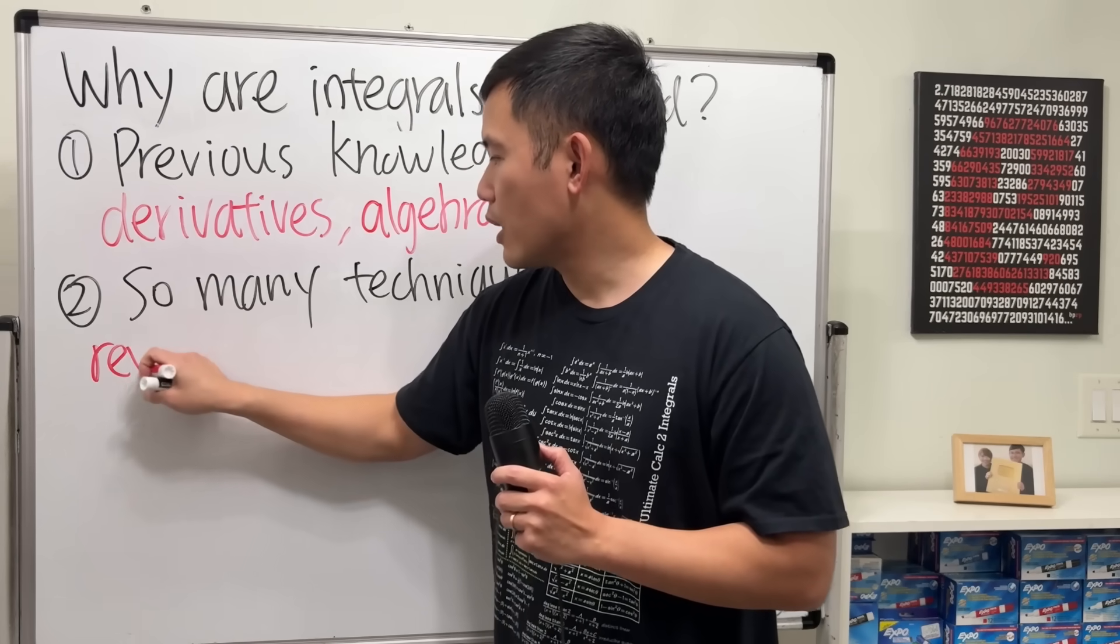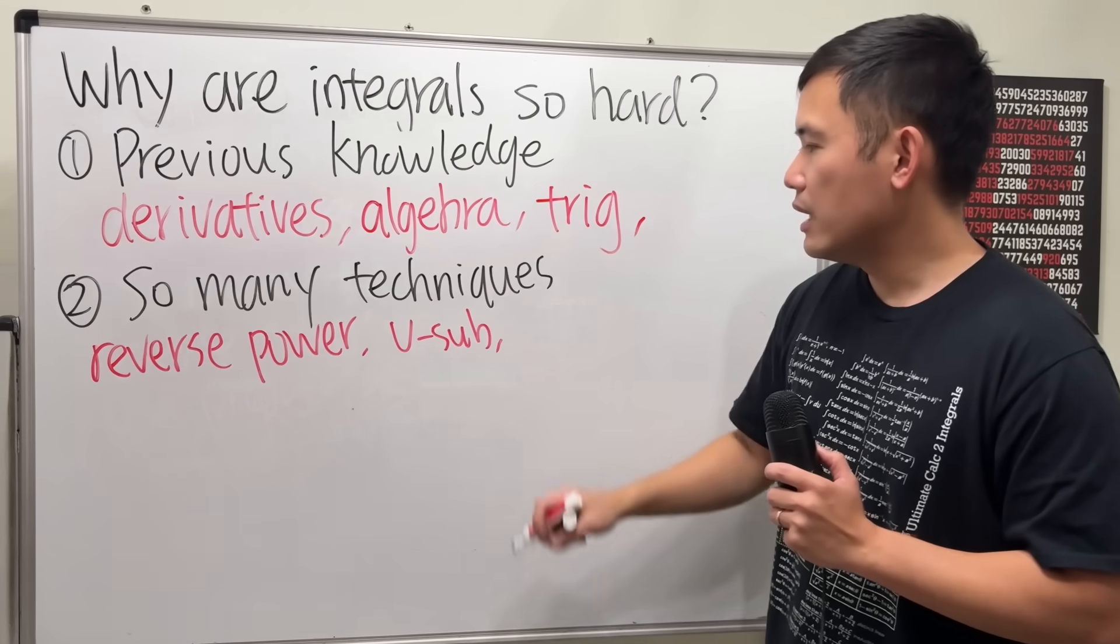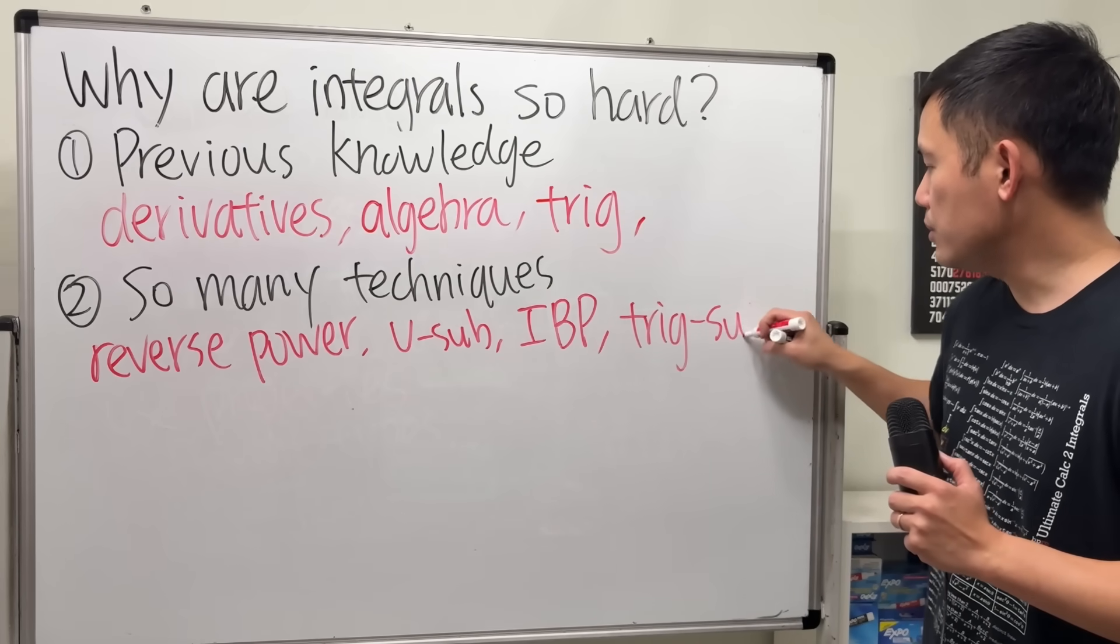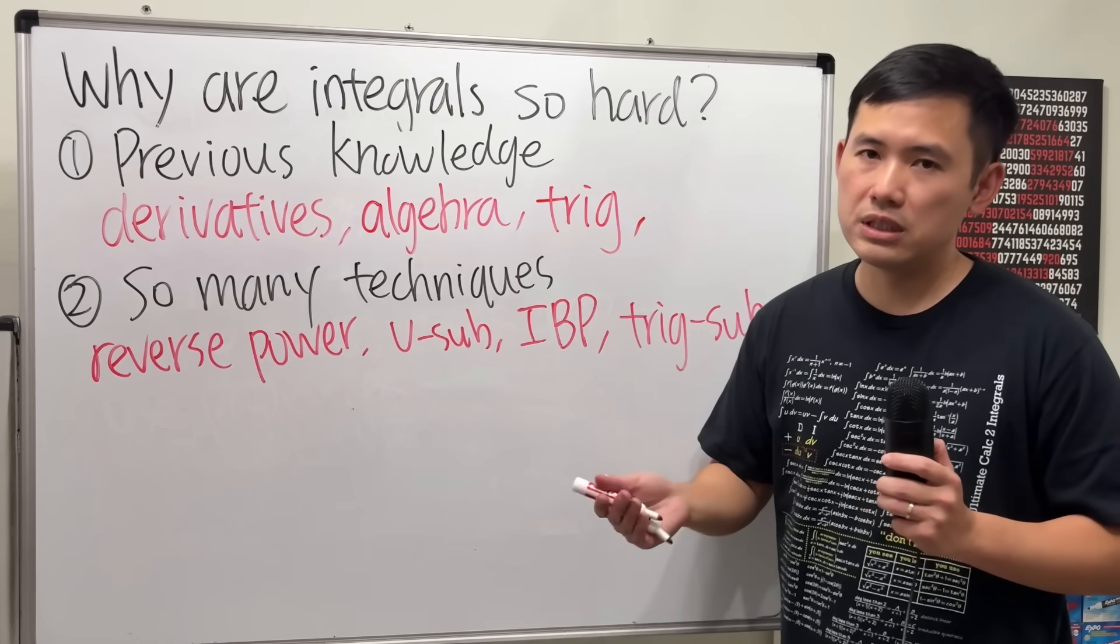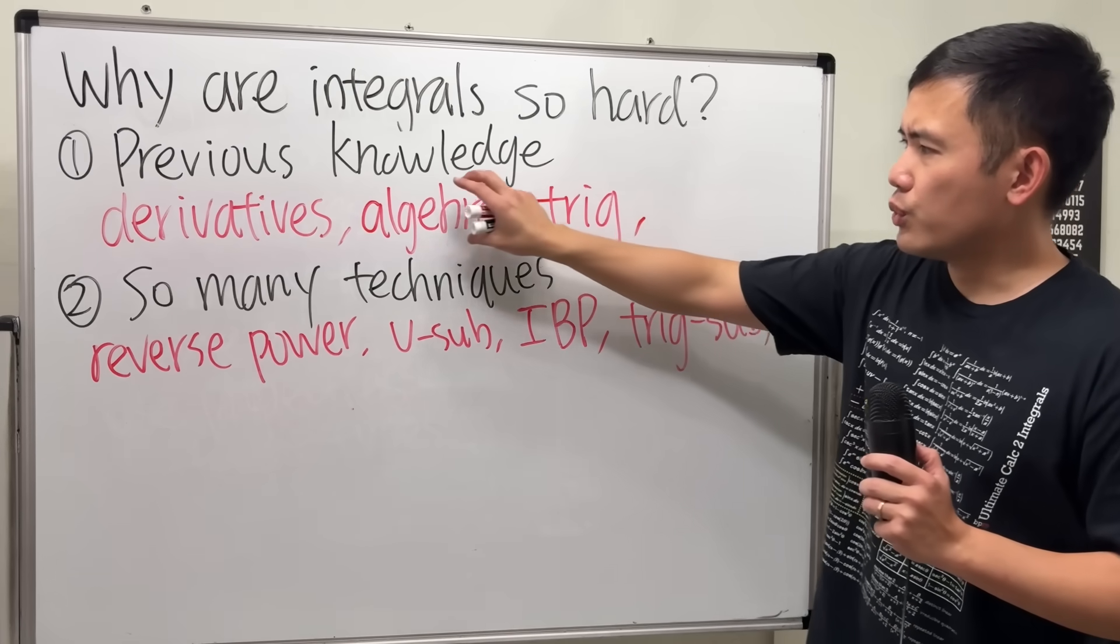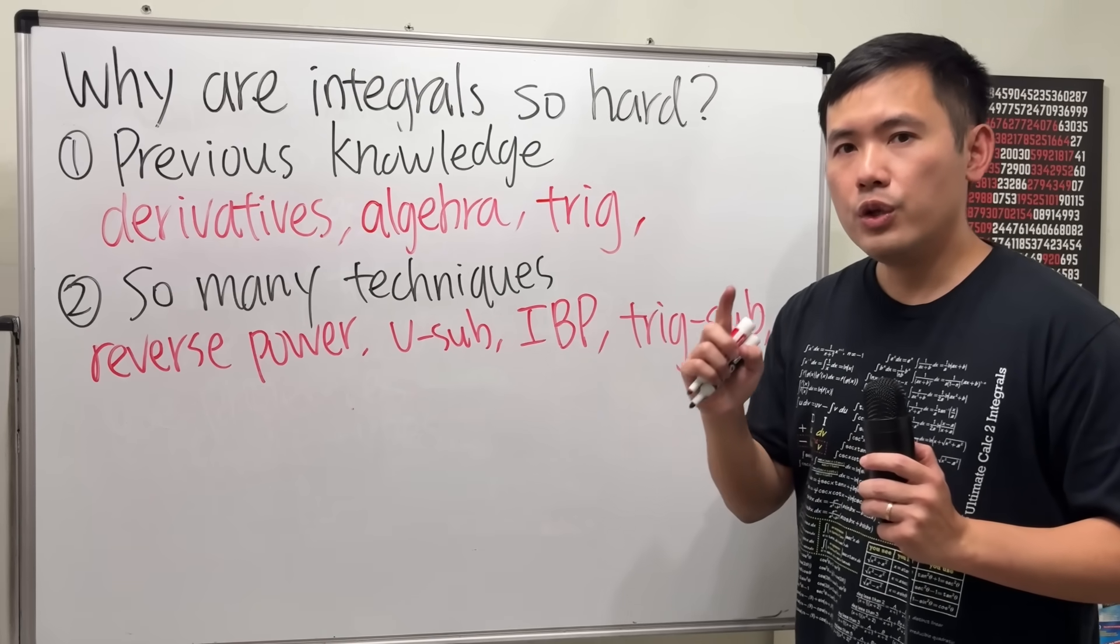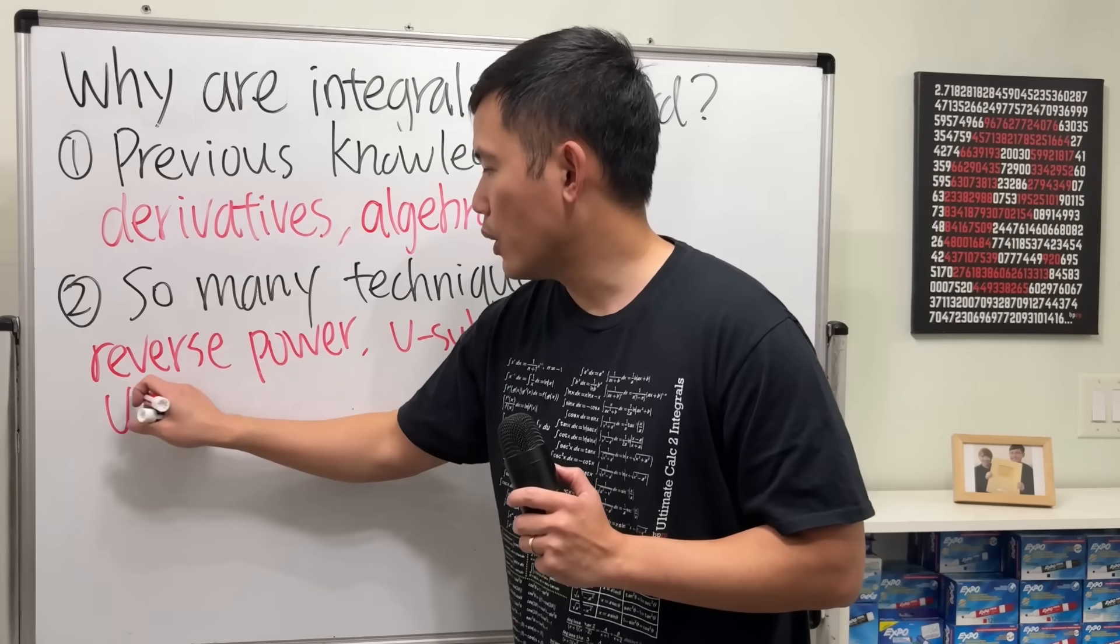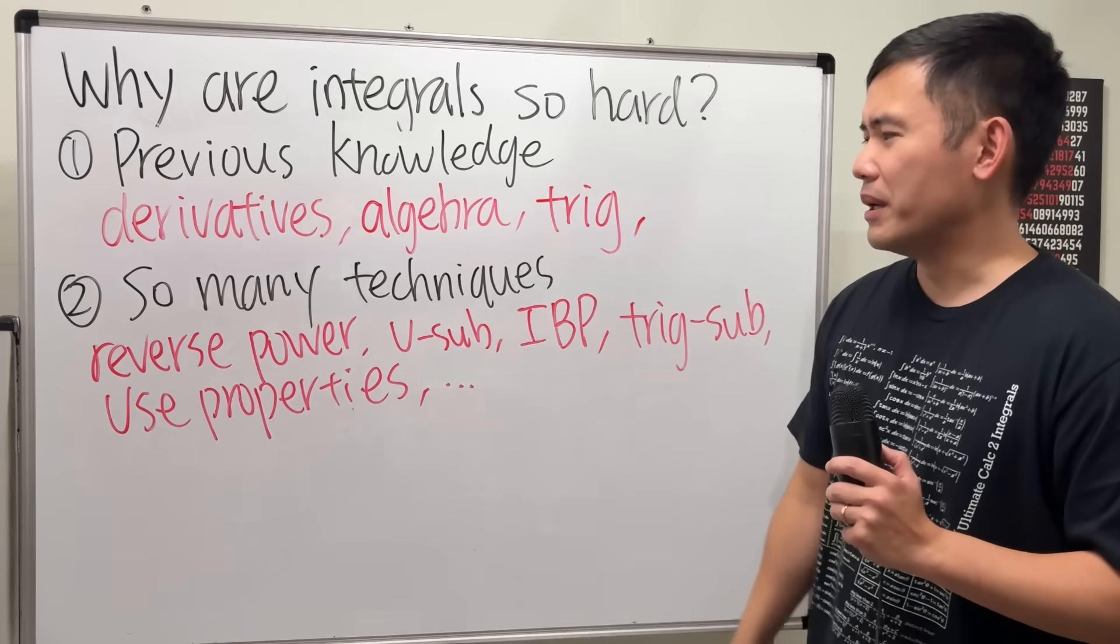Well, recall, from Calc 1, we start with the reverse power rule. And then we have the U sub. And once we get to Calc 2, we begin with integration by parts. And then you will also see some trig substitution. And depending on your instructor, some of them might cover what we call the Weierstrass substitution, some of them not. Notice I didn't put down partial fractions or trig integrals because they are more toward like the algebra or the trig identity part. For integration by partial fractions and also trig integrals, you really need to know the integral-ready forms that I have right here for you guys. And sometimes, you also have to use properties in order to figure out some integrals. So there are just so many different techniques.